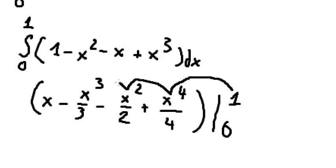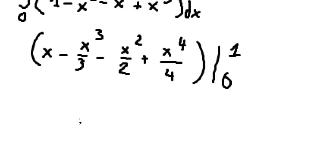So we put one in here, zero in here, and we calculate this. So we calculate this one and we have 5 over 12. This is the end, thank you for watching.